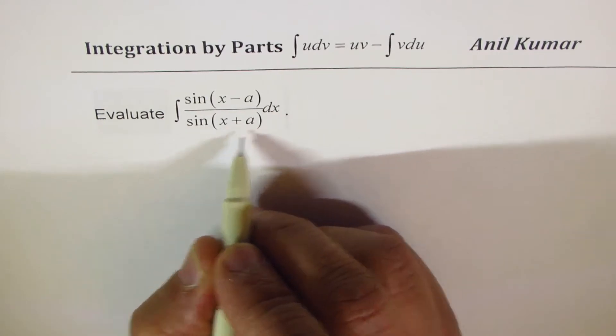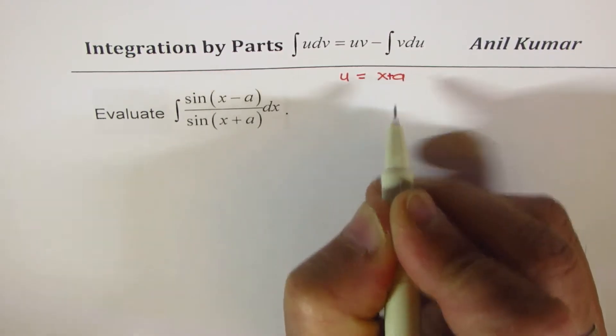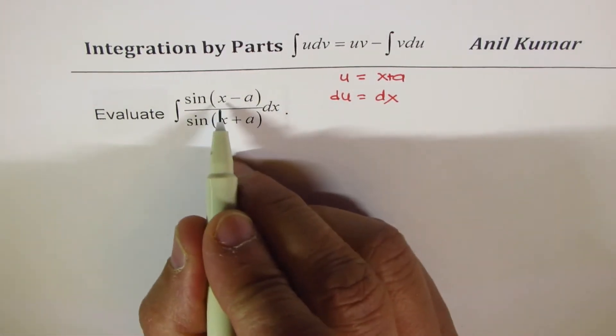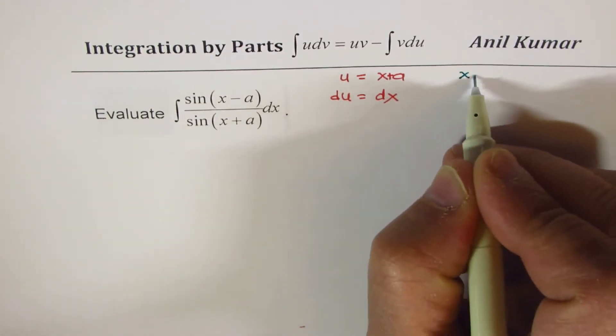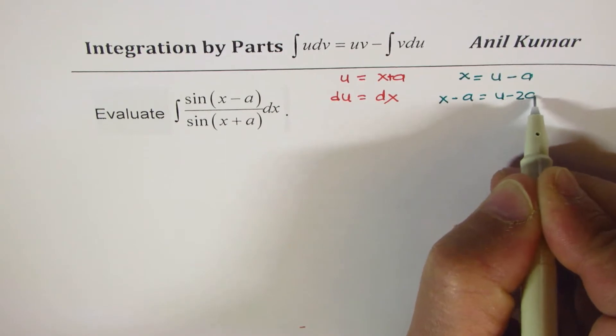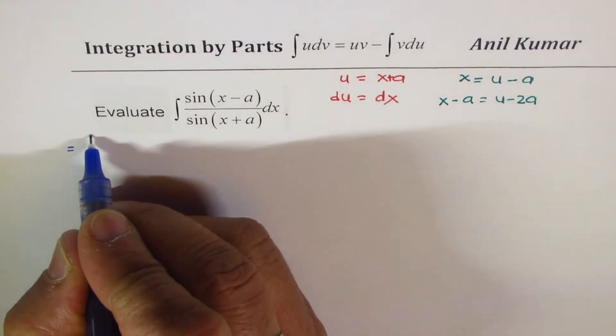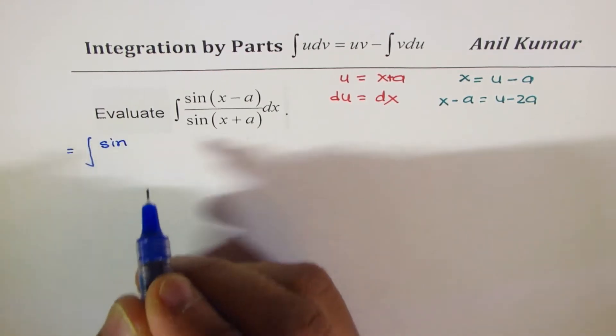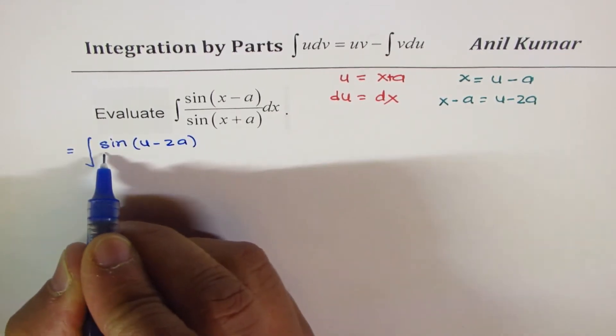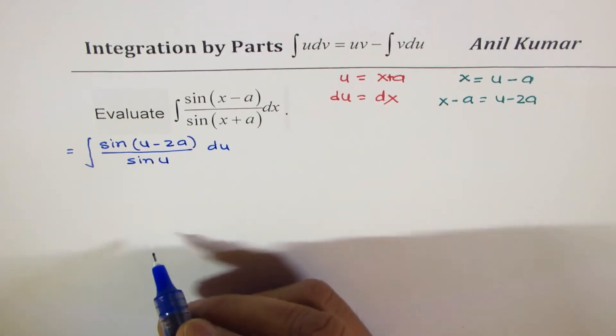Let us first replace x+a with a parameter u. Let's say u equals x+a. In that case, du will be equal to dx. And we can rearrange this and find what x-a is. So x is equal to u-a, and x-a will be u-2a. Now replacing these terms in the integral, we can write this as the integral of sin(u-2a) over sin(u) du.